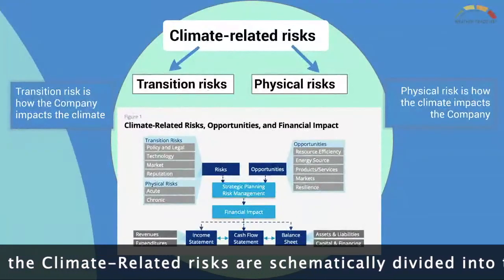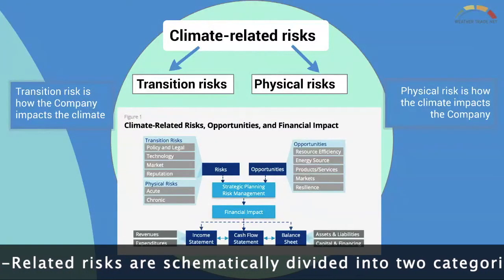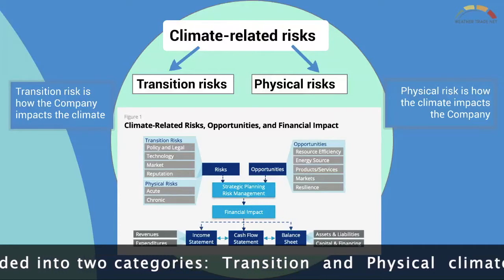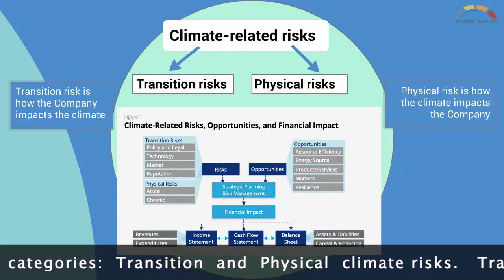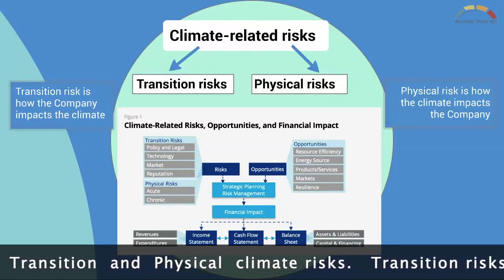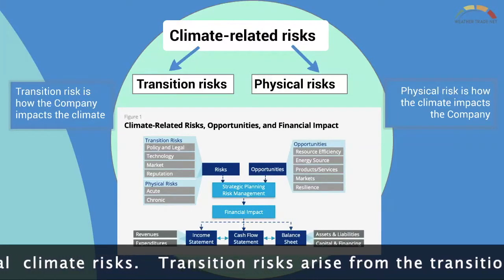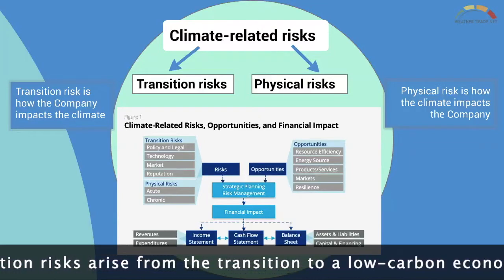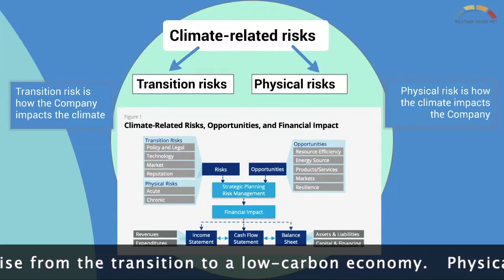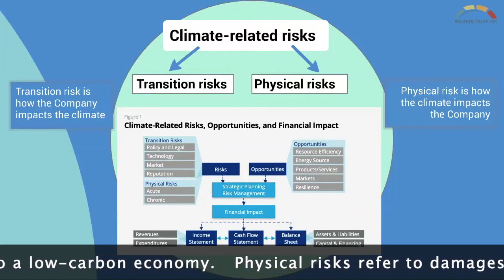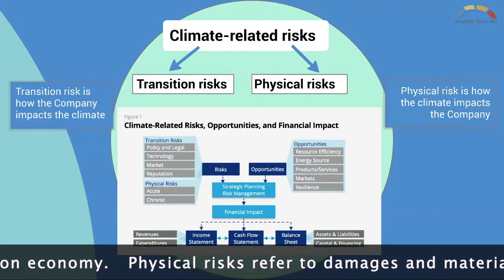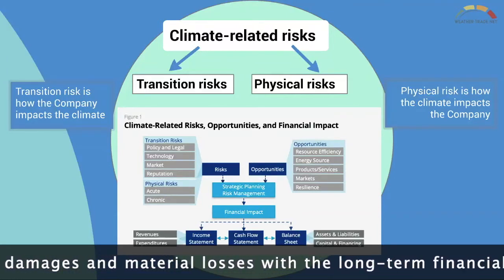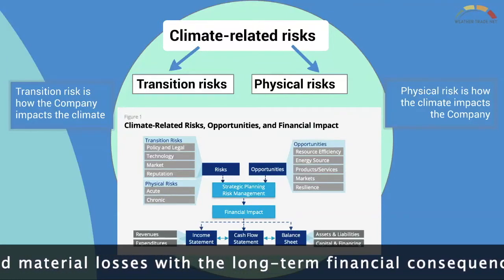Transition and physical climate risks. Transition risks arise from the transition to a low-carbon economy. Physical risks refer to damages and material losses with long-term financial consequences induced by natural hazards in a changing climate.